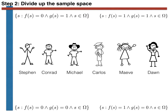Let's now use these functions to build subsets, just as we did in the classical probability example. Using our set-builder notation, in the top left corner this notation reads: s is a member of the subset if f(s) equals 0 (male) and if g(s) equals 1 (name begins with M).